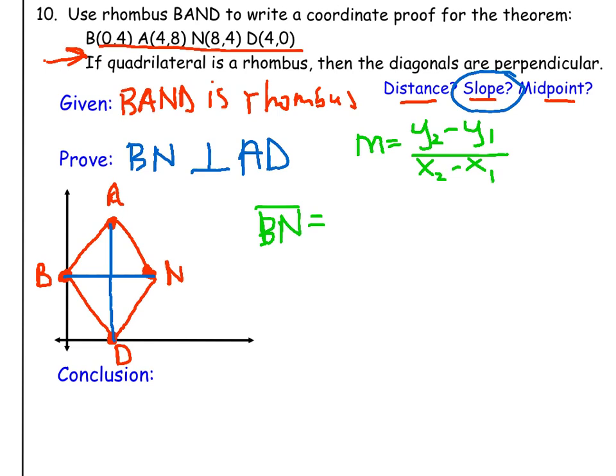Well in a coordinate proof, you're trying to show that even though you can see that it's horizontal, you're trying to actually prove it.